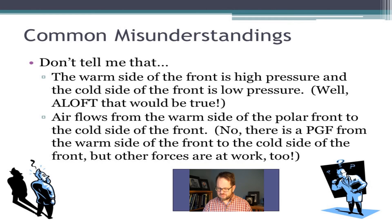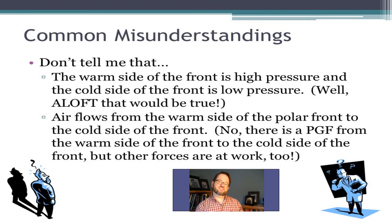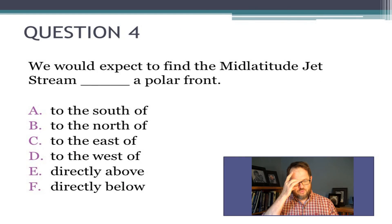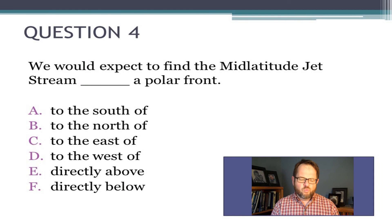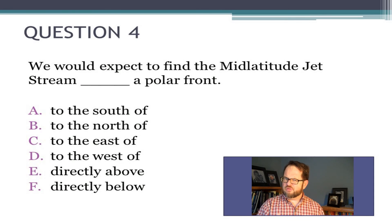The thermal wind relationship is huge. I apply it with graduate students and upperclassmen in atmospheric science classes constantly — it's a very important understanding. We are applying it to one particular problem: why is there a mid-latitude jet stream sitting right above the polar front? And here's a question for you: we would expect to find a mid-latitude jet stream blank a polar front — to the south of, to the north of, to the east of, to the west of, directly above, or directly below. Make a choice from those six options and get feedback before moving on to question five.